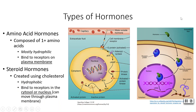We have two main categories of hormones: amino acid hormones and steroid hormones. Amino acid hormones are composed of amino acids and are mostly hydrophilic, also known as water-soluble hormones. These bind to receptors on the surface of the plasma membrane itself. Steroid hormones, on the other hand, are created using cholesterol and are hydrophobic or lipid-soluble hormones. The receptors for steroid hormones are located inside the cell, in the cytosol or on the nucleus, so steroid hormones actually pass directly through the plasma membrane to the interior of the cell before they bind to the receptors.